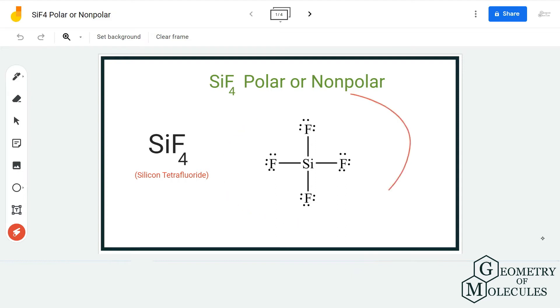its Lewis structure, followed by its shape, and then we will check the difference of electronegativities for silicon and fluorine atoms to find out if there is a net dipole moment in this molecule.